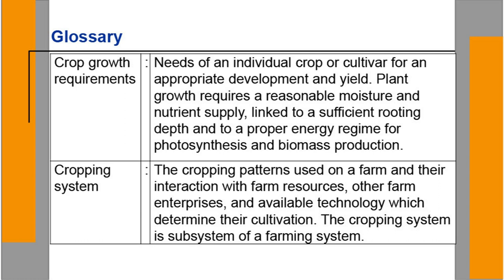Cropping system: the cropping patterns used on a farm and their interaction with farm resources, other farm enterprises, and available technology which determine their cultivation. The cropping system is a subsystem of a farming system, where crop or crop management is an integral part.